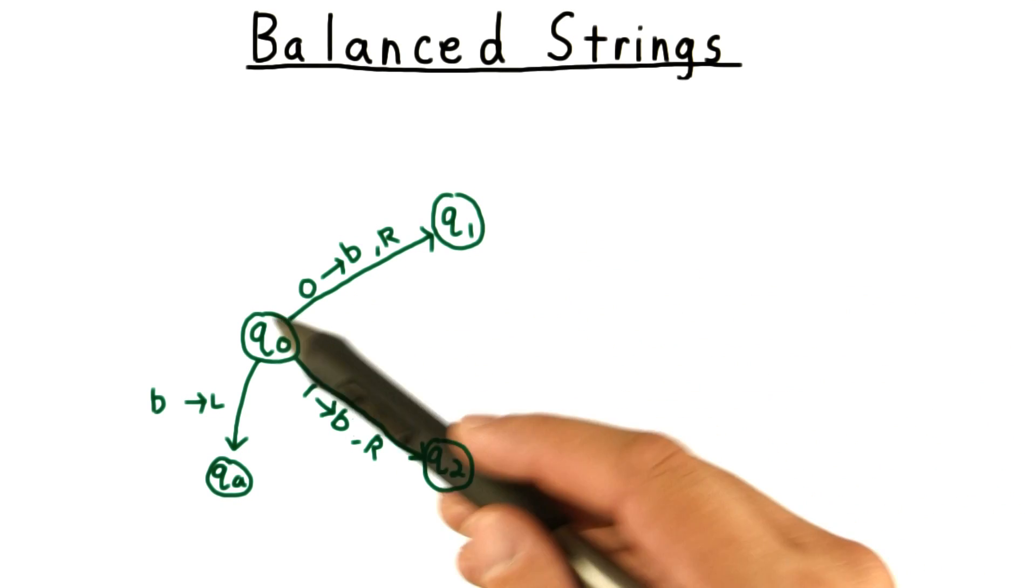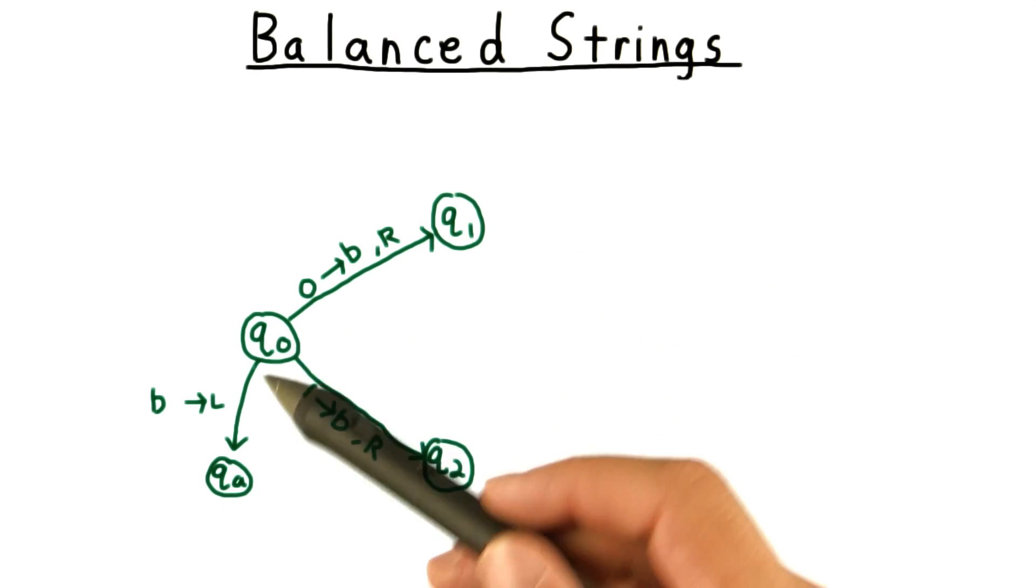Here's my solution. The initial state accepts on the blank symbol. The empty string is balanced naturally.